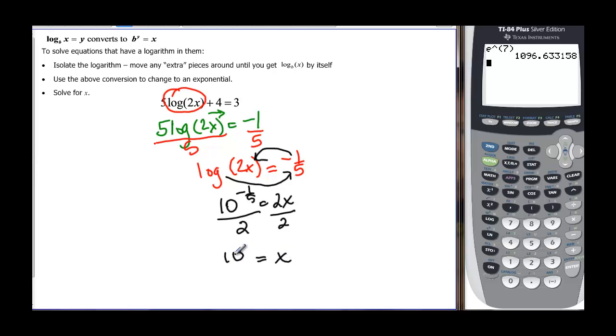So ten to the negative one fifth divided by two, which is going to be approximately, if we take it to our calculator, ten to the parenthesis negative one divided by five close the parenthesis, and that whole thing needs to be divided by two, and we find out that x is approximately 0.32.